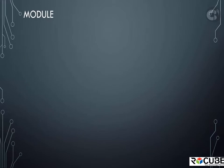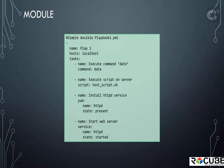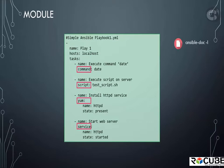Let's look at what a module is. The different actions run by tasks are called modules. In this case, command, script, yum, and service are all Ansible modules. There are hundreds of other modules available out of the box, and information about them is available on the Ansible documentation website, or you could simply run the command ansible-doc -l on your Ansible system.